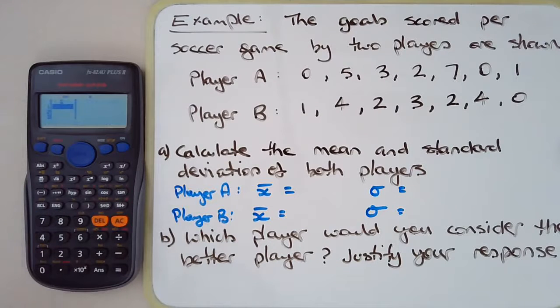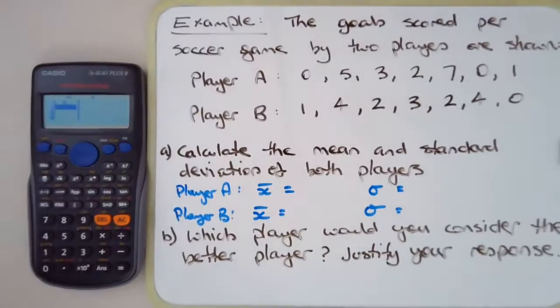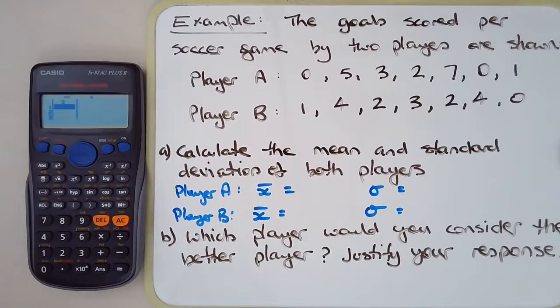Remember this: mode number two, stat, and one var. You should have a column. Let me just readjust that focus a little bit there. Hopefully you can see that a bit better. Let's enter in Player A's data.